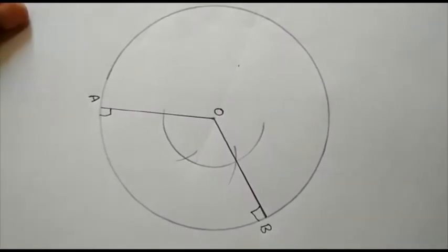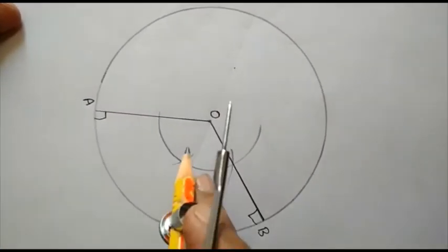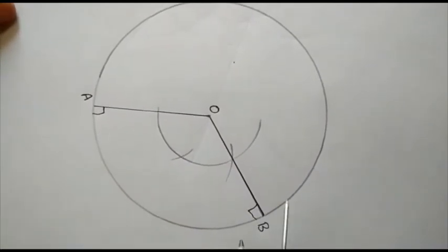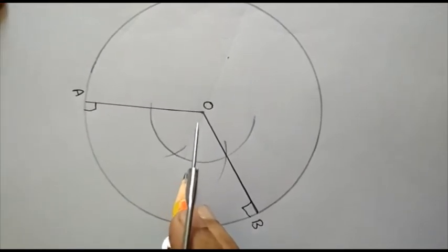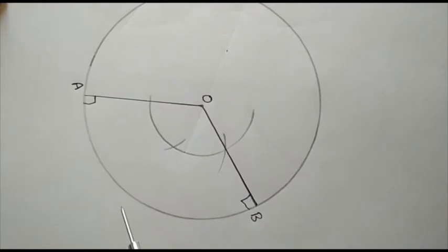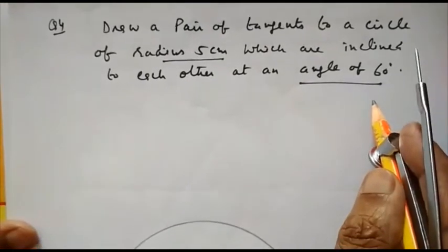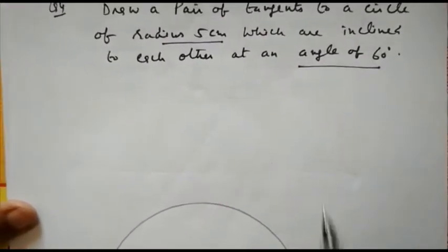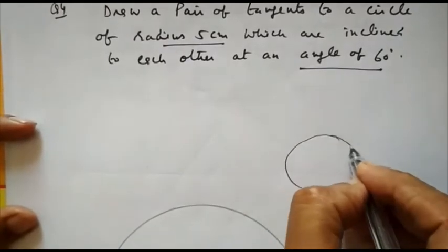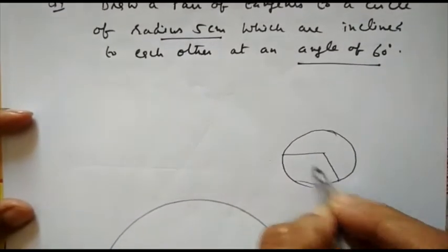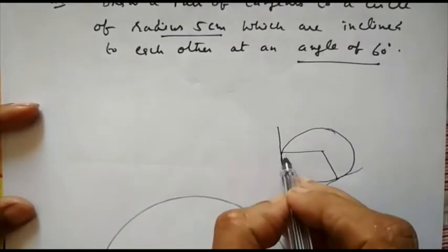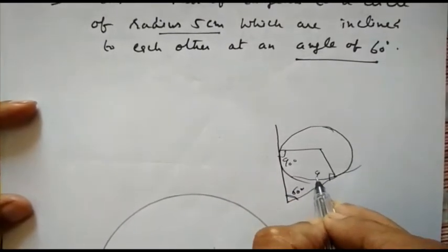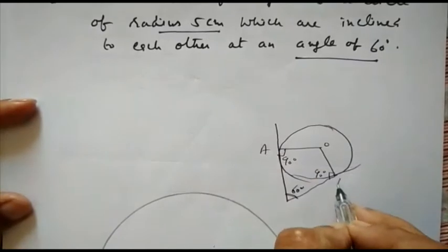So how to draw it? First, I have drawn a circle with center O and radius 5 cm. And first of all, I have to select how much angle to be drawn at the center. If the angle outside the circle, that is angle between the two tangents is 60, it means for a quadrilateral, if these are the two tangents and this angle of inclination is 60.